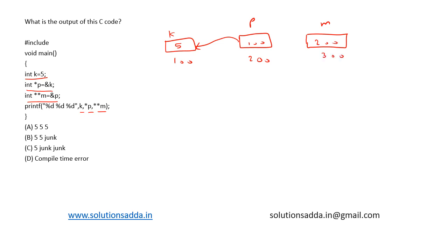Now let's see what we are trying to print. First we are trying to print the value of k. k is having the value 5. Now we are trying to print star p. p means the value inside this, that is 100. Star p means it will move here. So we are again printing the value of 5.